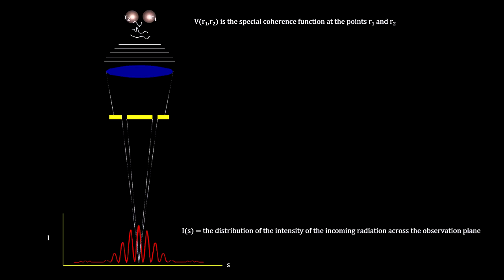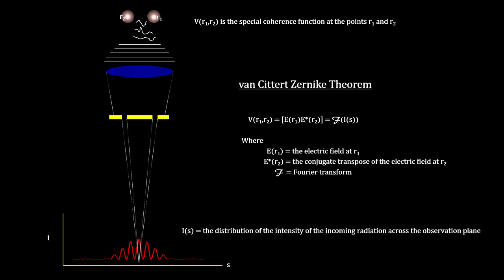See how the amount the image fades is greater the further apart the two stars are. The math involved was developed independently by Dutch physicist P.H. van Cittert in 1934 and F. Zernike in 1939. It's known as the van Cittert-Zernike theorem.